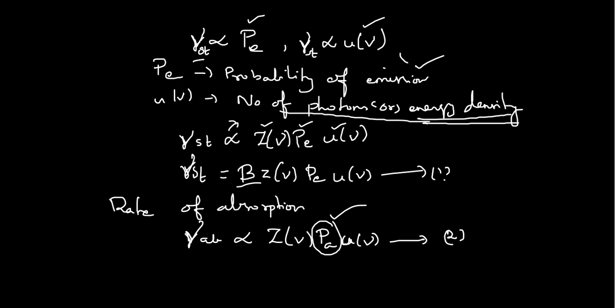The proportionality is removed by a constant B, giving R_st = B · Z(ν) · P · U(ν) — equation 1. The rate of absorption is similar, but with P_A, the probability of absorption, replacing P — giving equation 2 analogously. B is the Einstein B coefficient, used for both stimulated absorption and stimulated emission — which we have studied previously in the context of lasers.